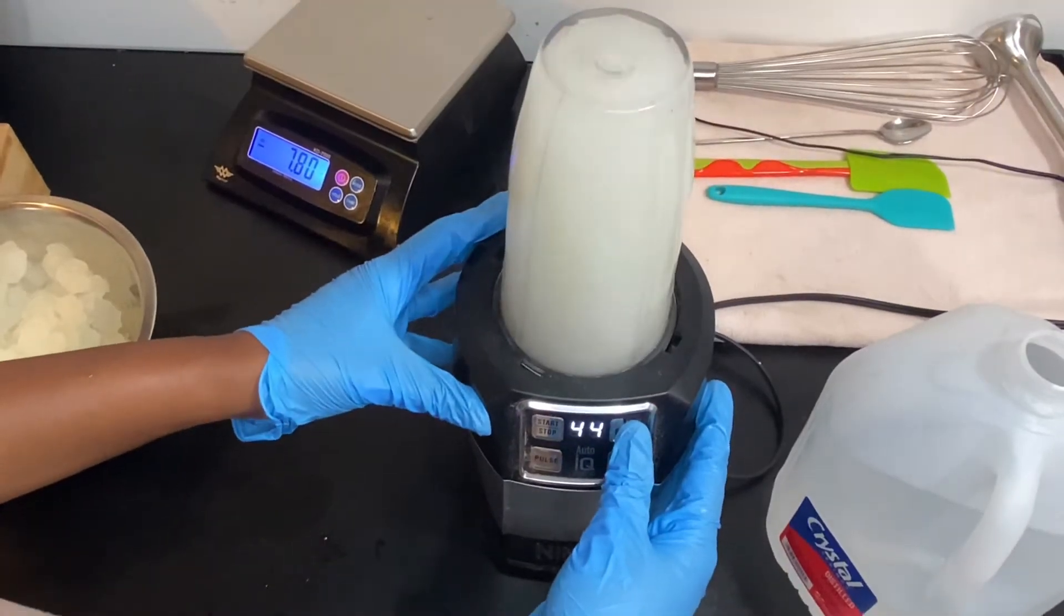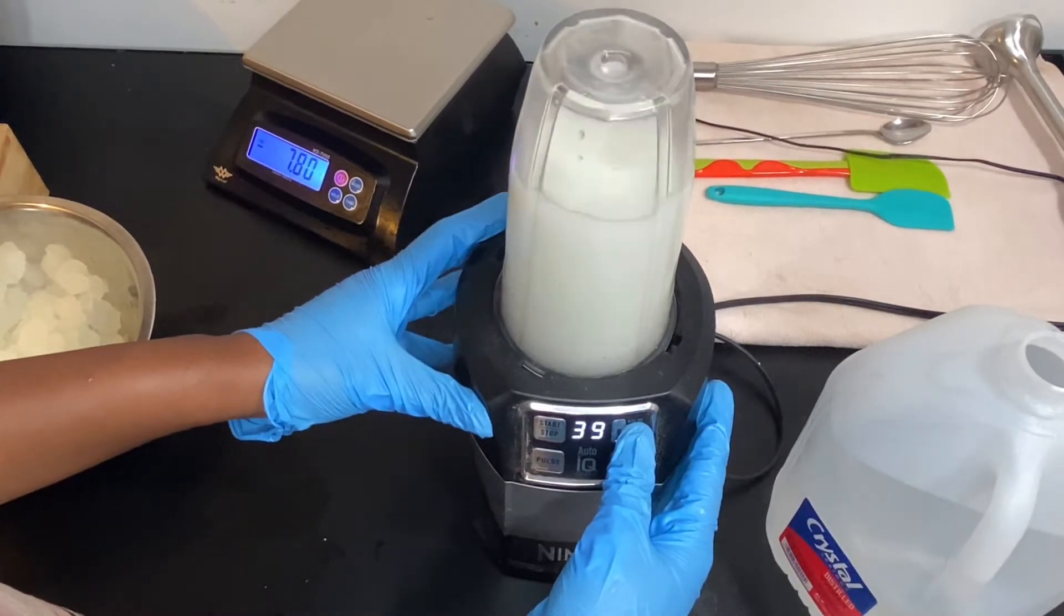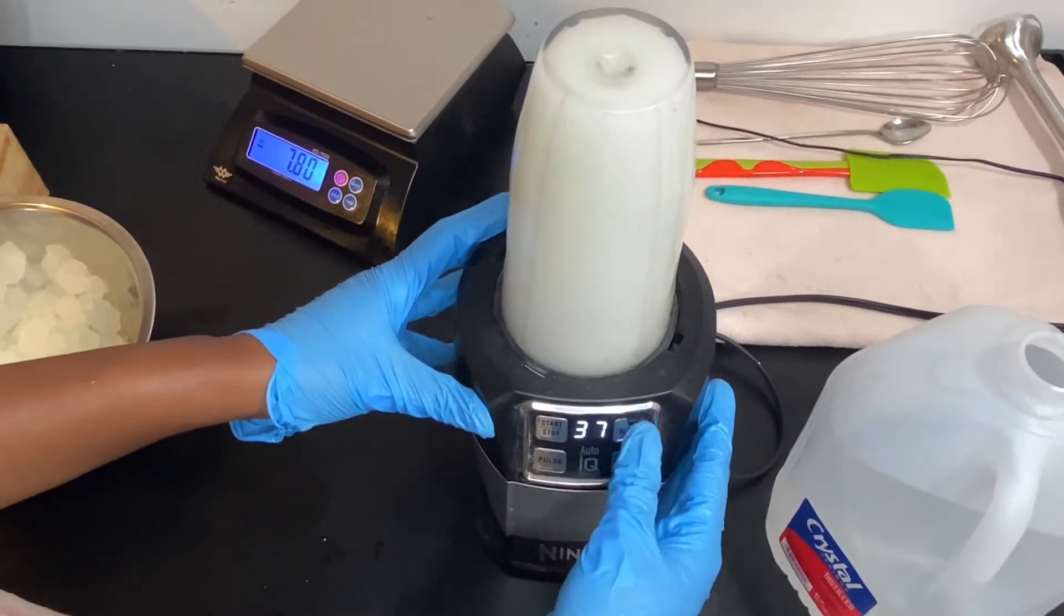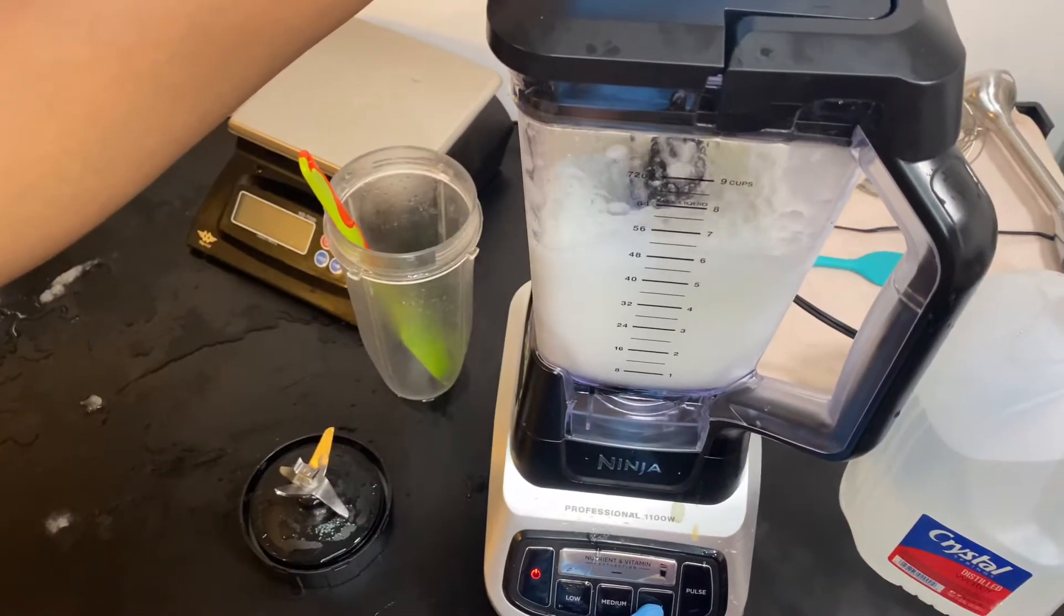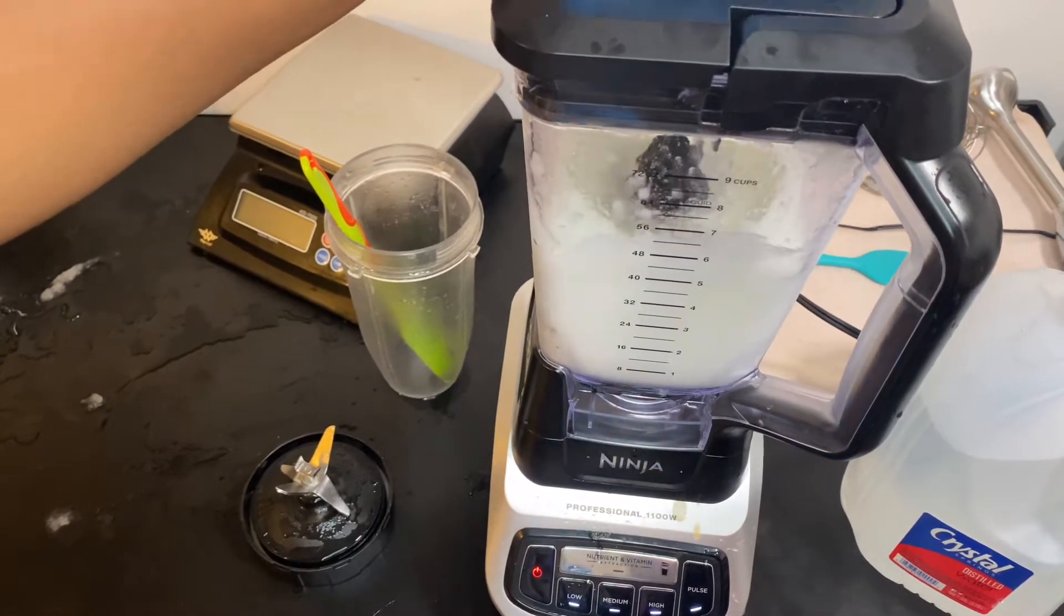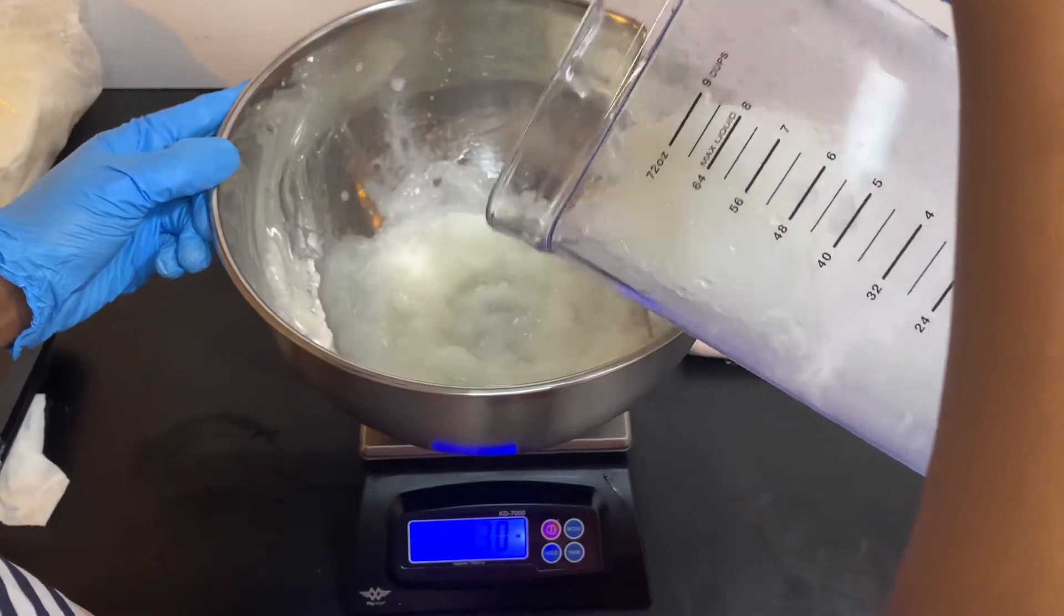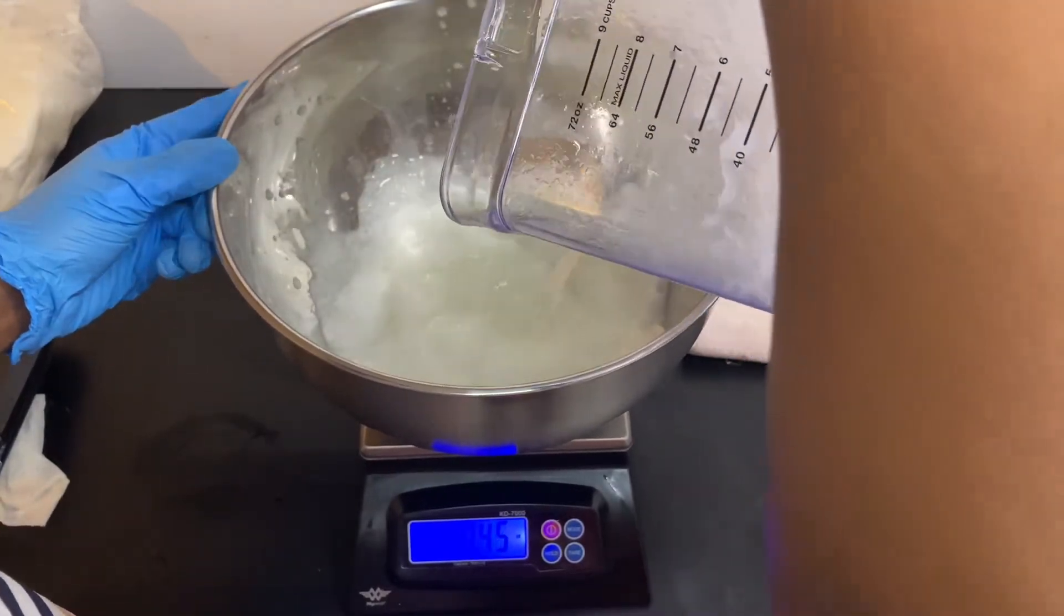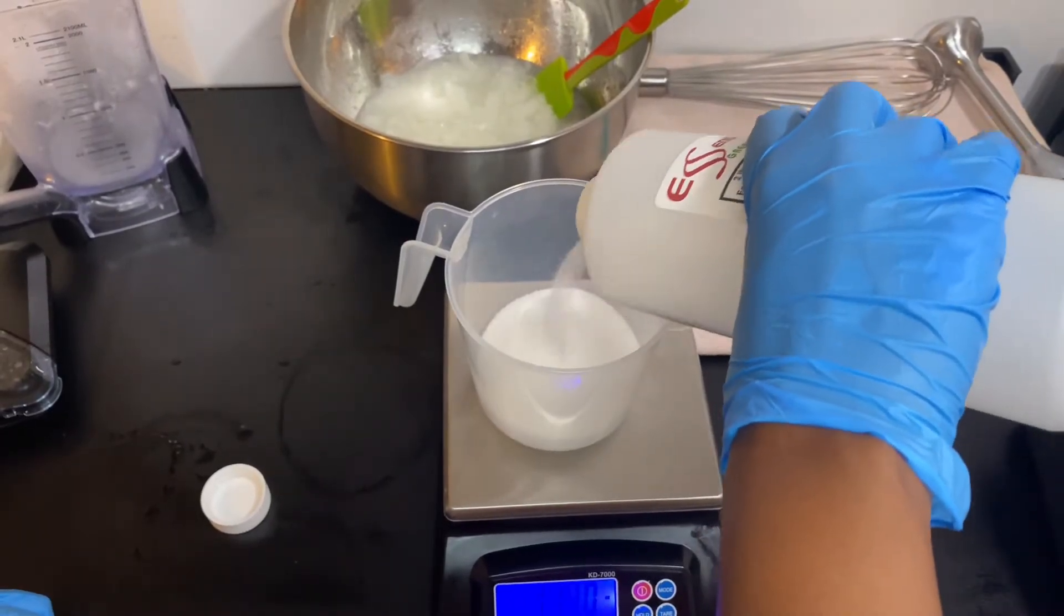So here you can see me blending - this is a Ninja. I'm blending the aloe together, and then I had to move over to a larger blender because that blender was too small. We're going to blend it until smooth and then pour it out into our bowl. To make sure that we have the right amount, I added a little bit of water. And now we're measuring out our lye.